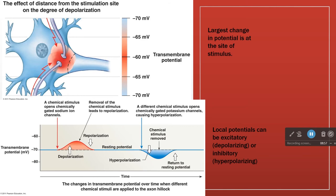When we open potassium channels, positivity goes rushing out of the cell, so the inside of the cell becomes more negative. Generally speaking, depolarizing influences are on the sodium side.